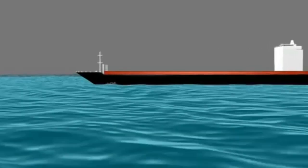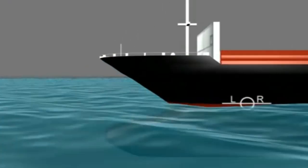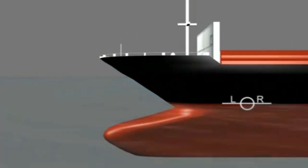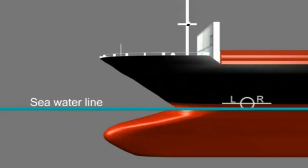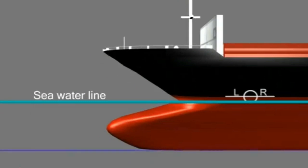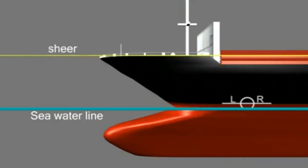The purpose of a load line or a Plimsoll line is to ensure that the ship is not overloaded and has sufficient freeboard. It indicates the maximum safe draft and the minimum freeboard for the ship in various operating conditions.